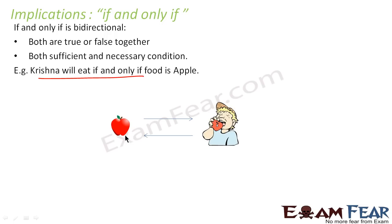So it is bidirectional. If the food is apple, we can say Krishna will eat. Also, suppose we are not aware of the food — we are only told that Krishna ate. Since Krishna eats only if it is apple, we can say the food he ate is apple, because the condition is Krishna eats if and only if it is apple. Similarly, if there is an apple and we have to find whether Krishna will eat or not, we can say Krishna will eat.